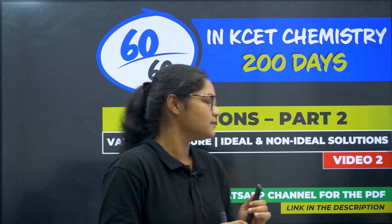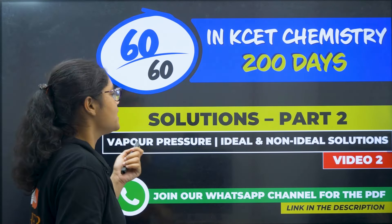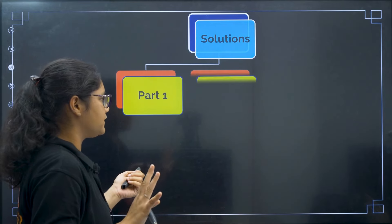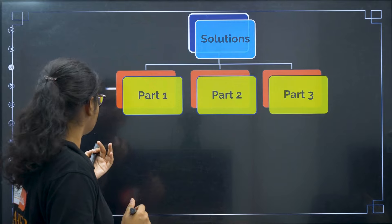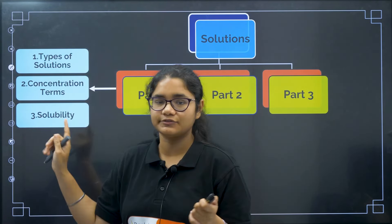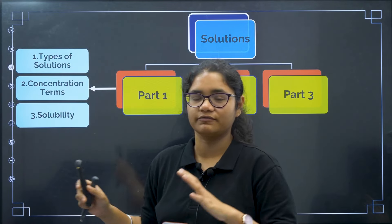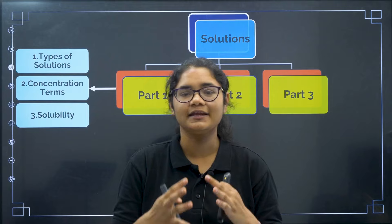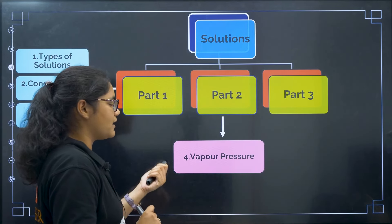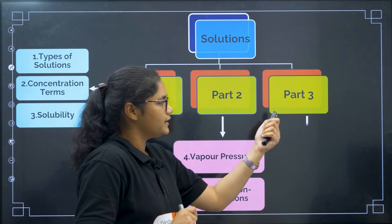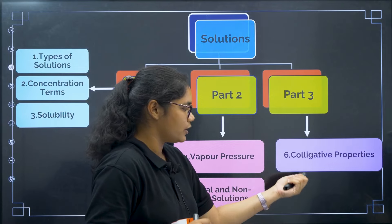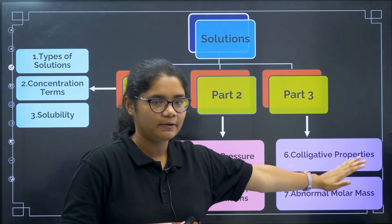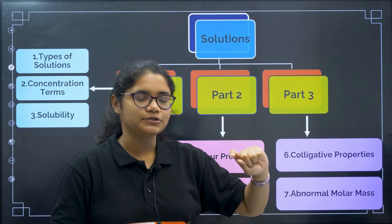Let us get started with the topic of vapor pressure and ideal and non-ideal solutions. I will explain how I am going to cover this particular chapter. There will be three parts. Today we are in part 2. In part 1, we already covered types of solutions, concentration terms, and solubility. In part 3, we will be covering colligative properties and abnormal molar mass. This chapter is divided into seven topics across three lectures, so please watch all parts for a complete understanding.